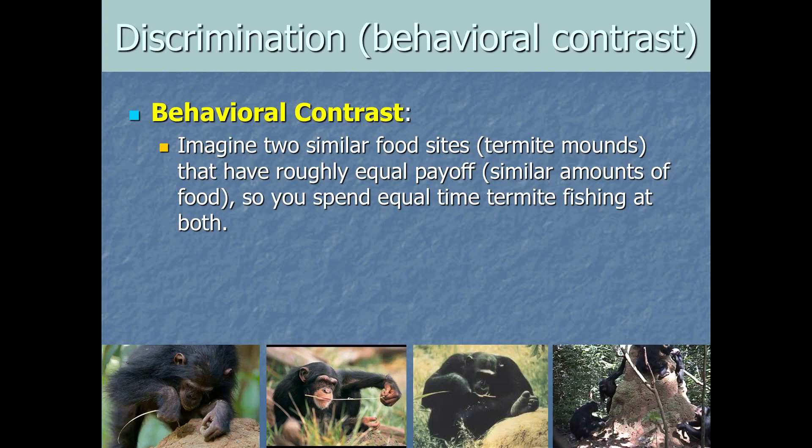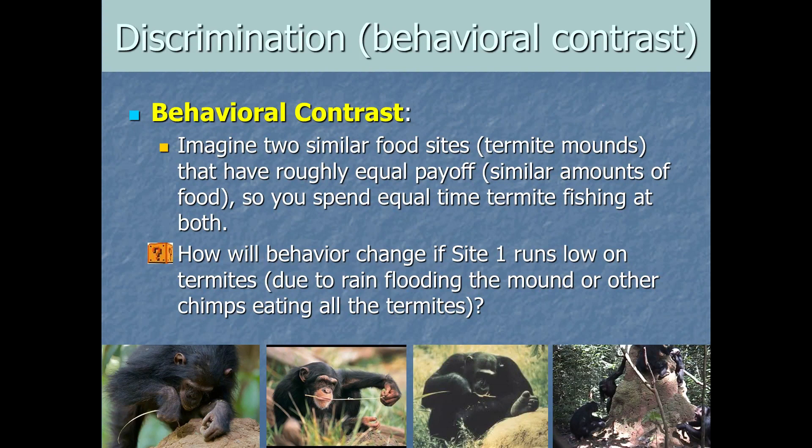So imagine you're a comparative psychologist watching this. And you note for this set of chimps you're watching. It's one chimp you're watching. There are very two kind of like very similar food sites right nearby. They give roughly equal payoff for the chimps. Similar amounts of food at each of these two food sites. You'll probably see the chimps spending roughly equal time at both sites. My question for you is how will a chimp's behavior change if site one suddenly runs low on termites? Like let's say there's rain flooding that floods the mound or other chimps eat all the termites there or something like that. Pause the video a second and make a prediction about how the behavior will change if site one runs low. So you probably guessed that they'd start spending more time at site two, more foraging behavior at that other location, which is totally correct and not very surprising.